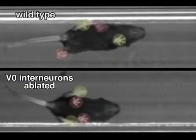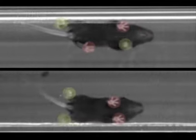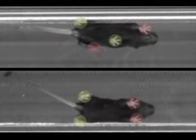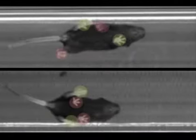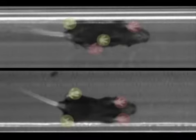This experiment shows that V0 interneurons are essential for regulating the alternating CPG activities of the left and right limbs during normal walking. It also serves as an example of how specific circuit disruption can lead to significant phenotypic alterations.